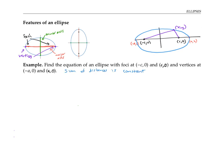In fact, that constant has to equal 2a — here's why. Looking at the point at the far right tip of the ellipse, its distance from the first focus is (a + c) and its distance from the second focus is (a − c). Adding those up: (a + c) + (a − c) equals exactly 2a.